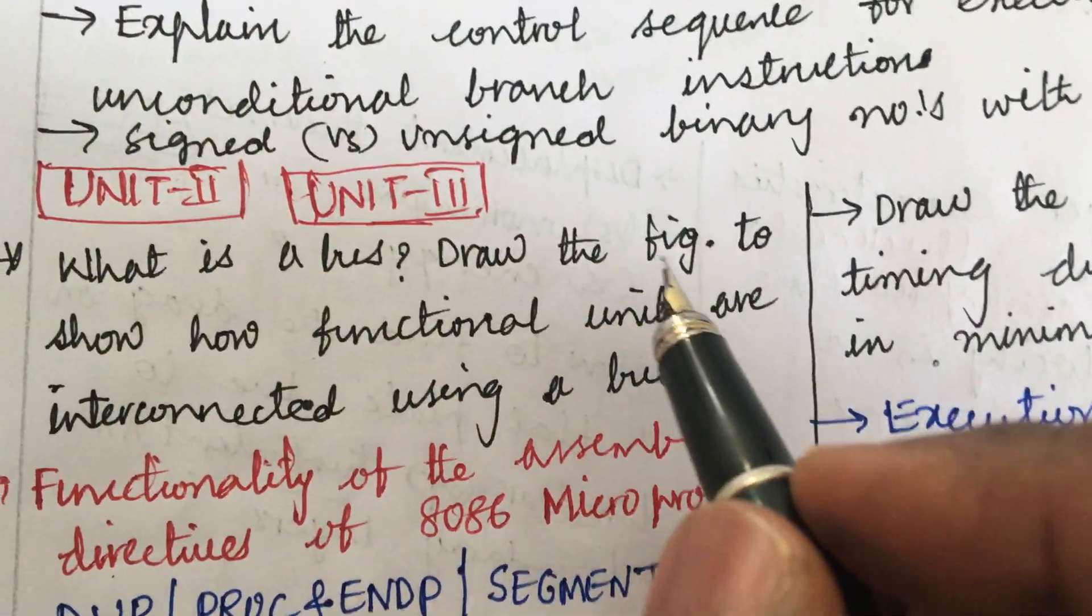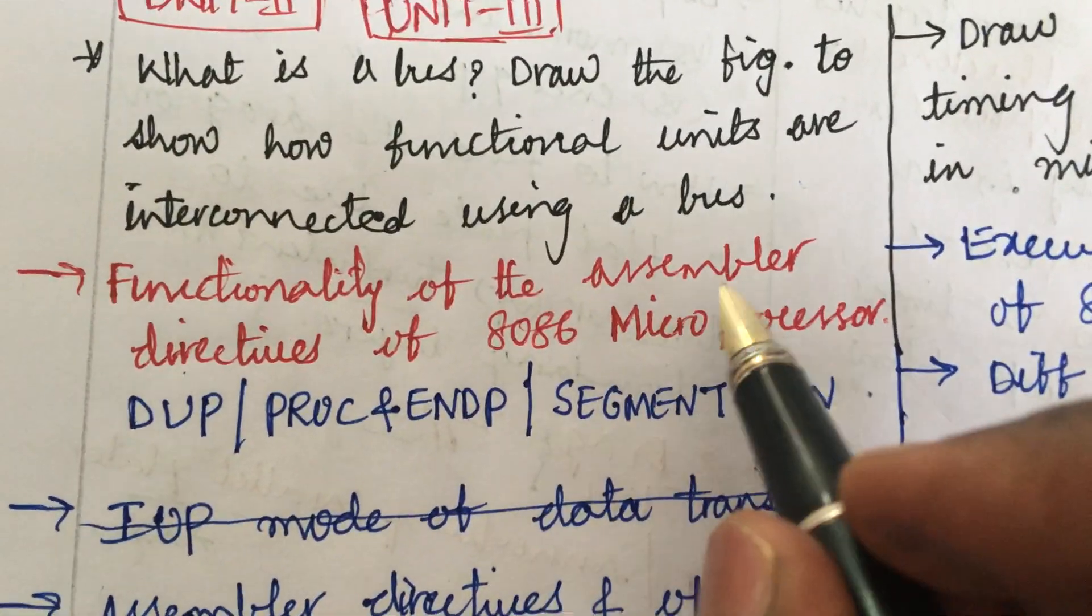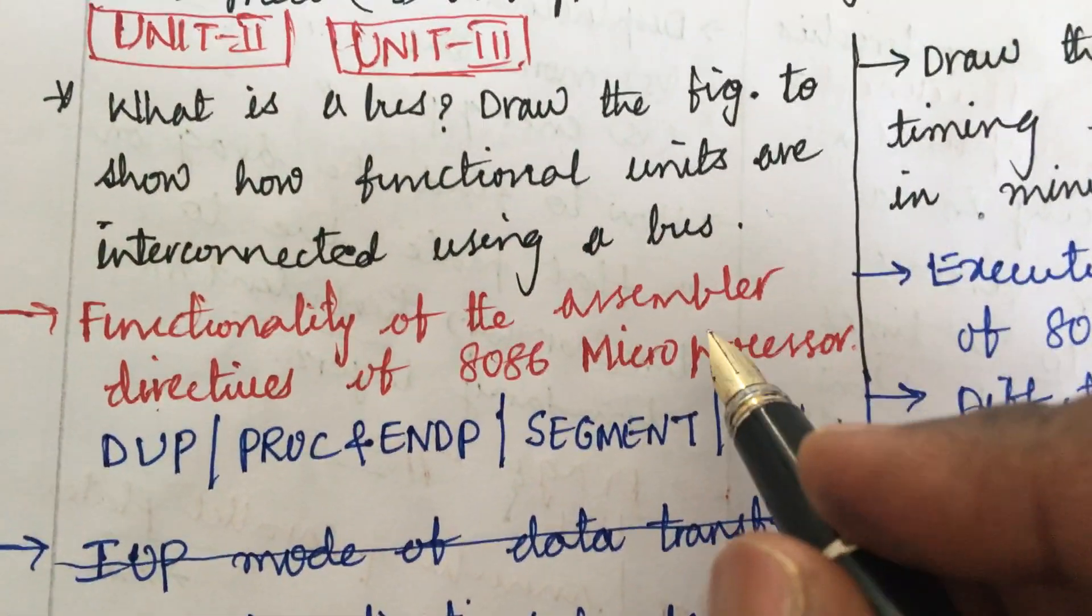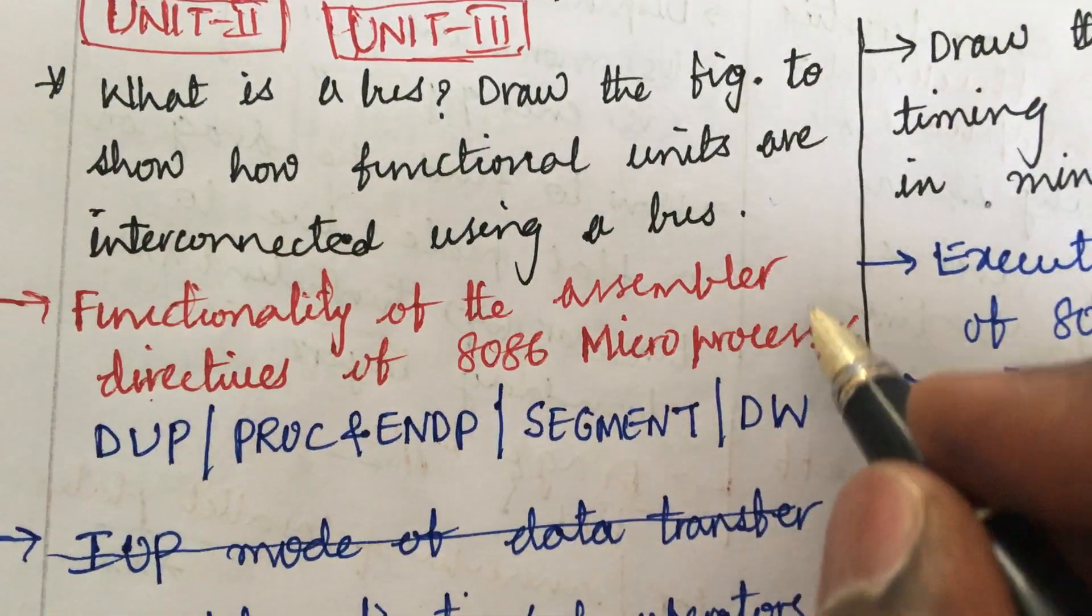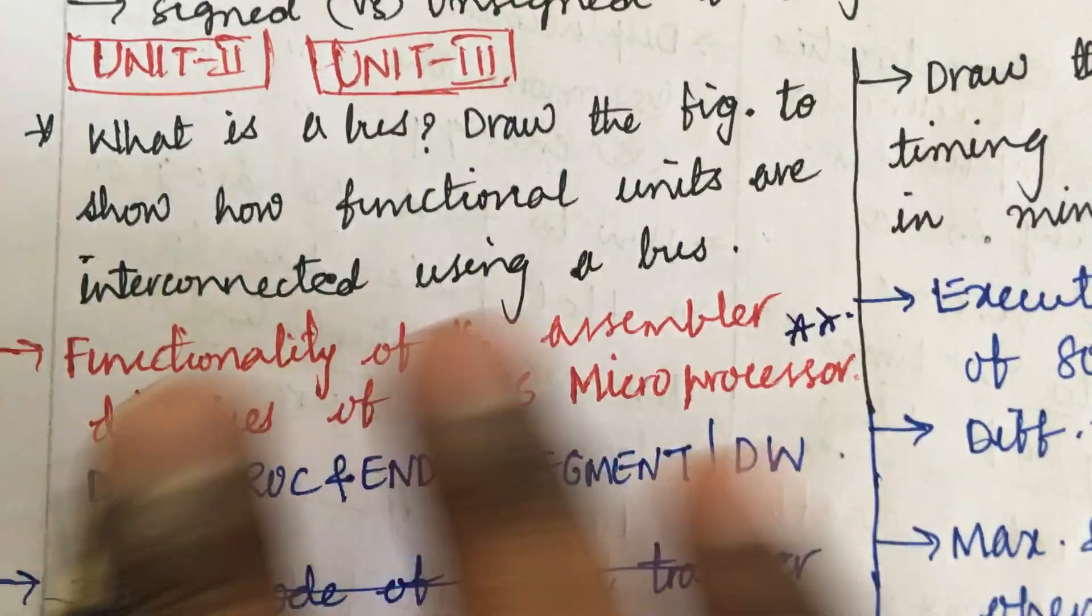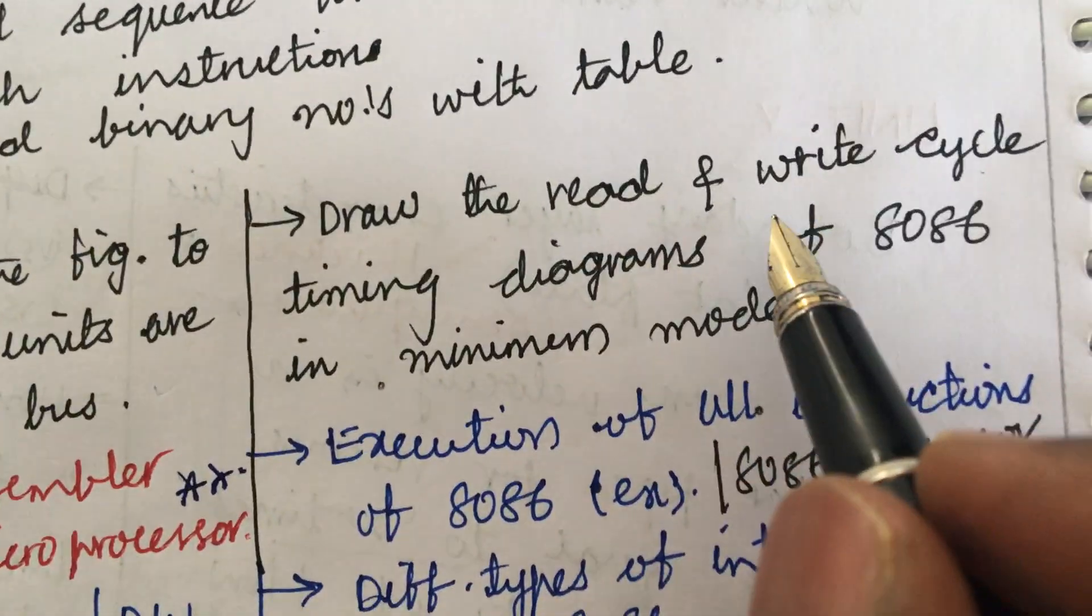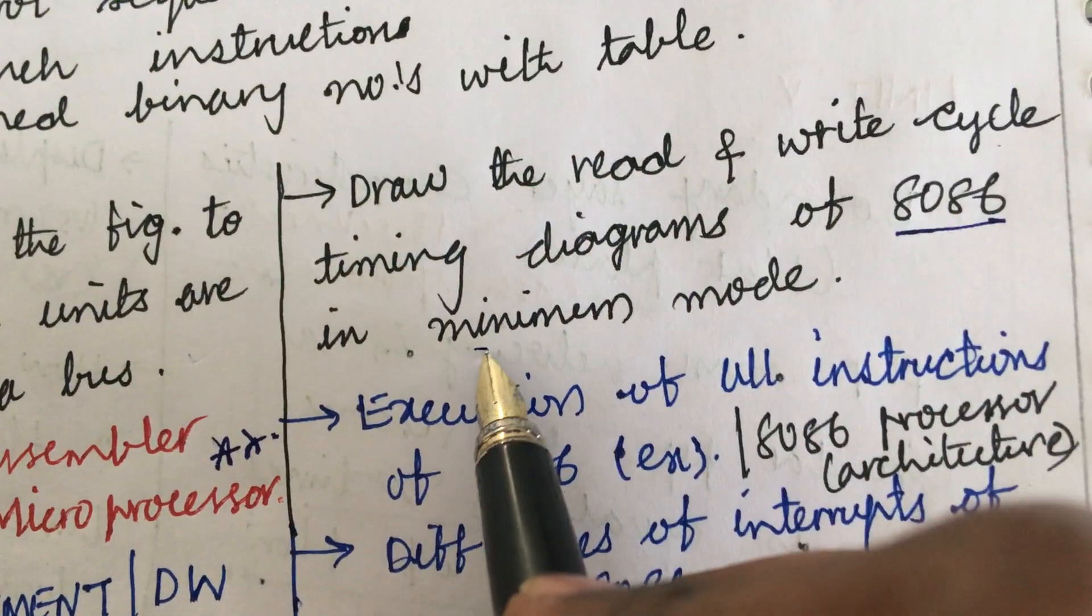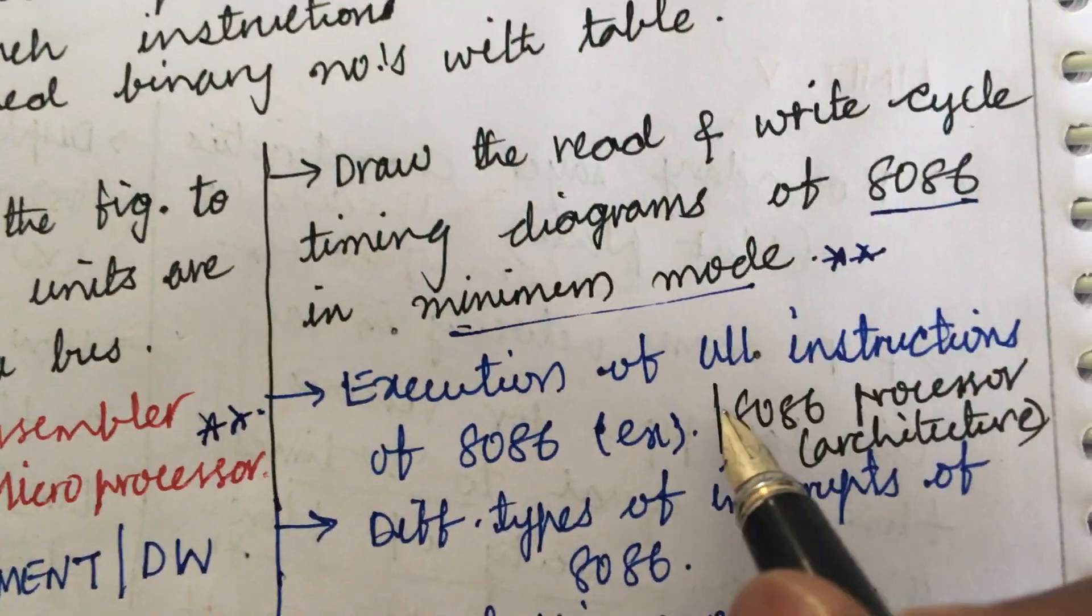What is a bus? Draw the figure to show how functional units are interconnected using a bus. Functionality of the assembler directives of 8086 microprocessor such as DUP, PROC, and ENDP, segment and DD such type of questions may be in term of 2 or 3 or sometimes even the five mark. Draw the read and write cycle timing diagrams of 8086 minimum mode is said to be the topmost question.